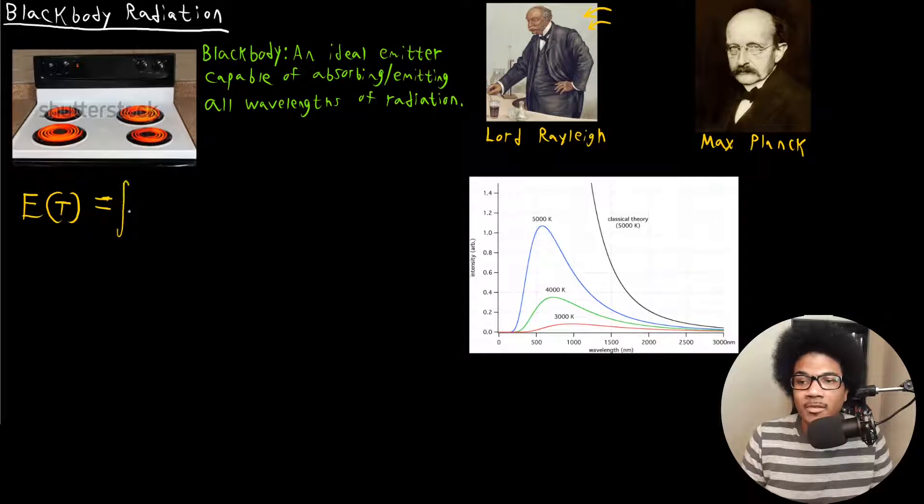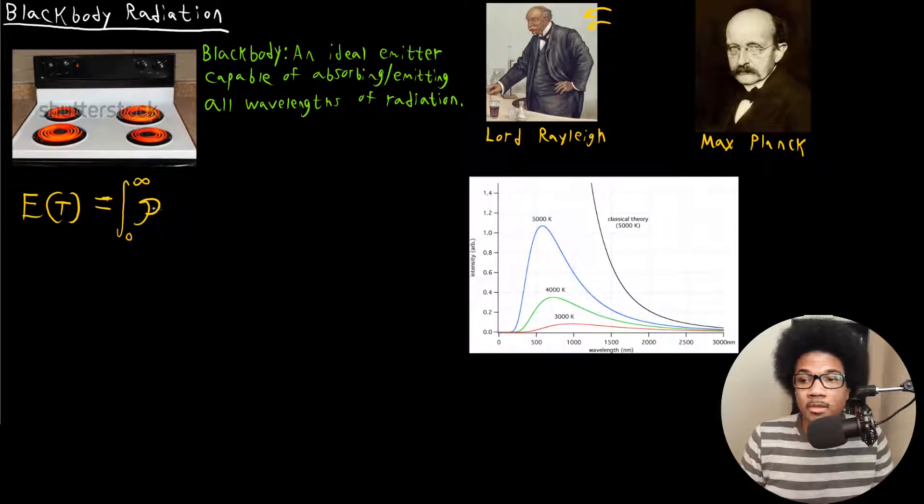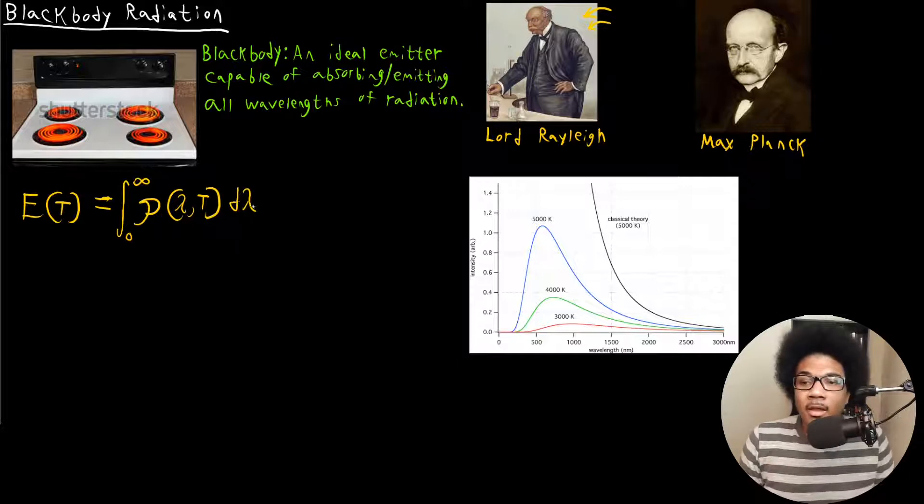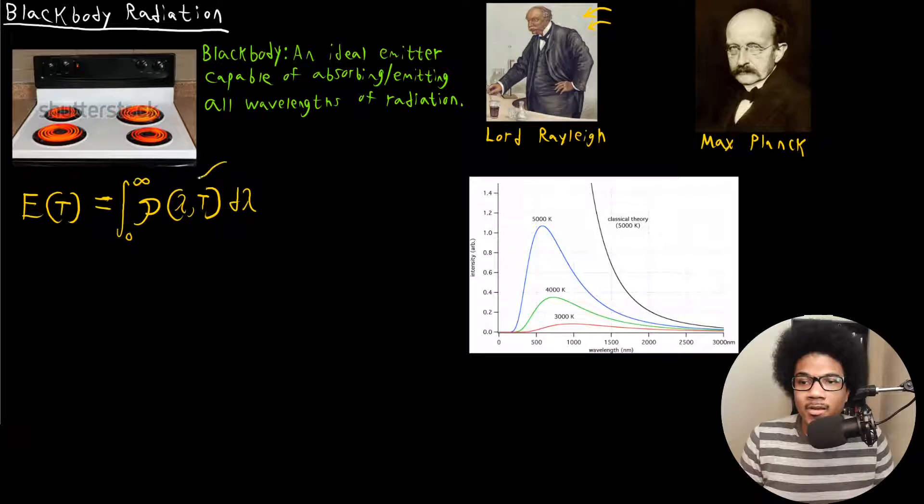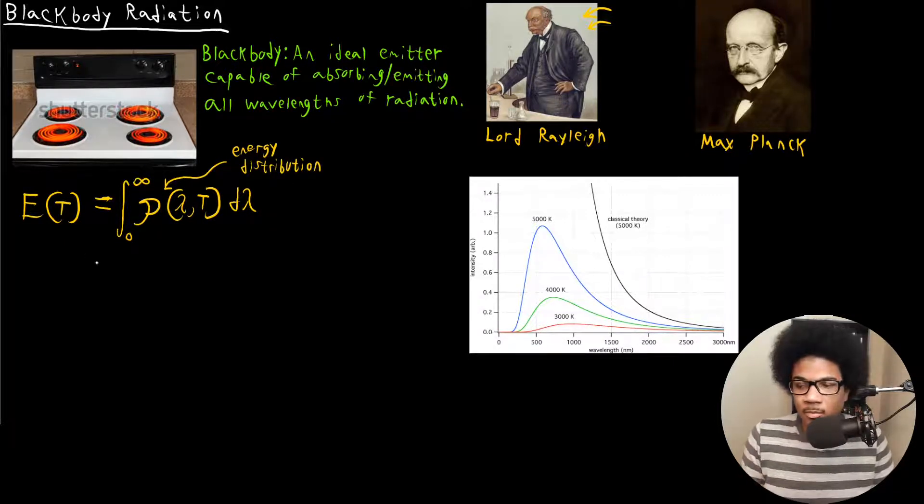You're going to have some energy that will depend on a density of states, a distribution of different states of the system. You'll have to integrate from zero to infinity over some distribution of states. That distribution, I'm going to use the Greek letter rho to denote that distribution. It's going to be a function of the wavelength of radiation and the temperature, and you're integrating over the wavelength. This is really the problem you're trying to solve, figuring out what this distribution going to look like. This is your energy distribution.